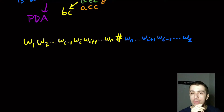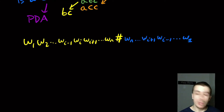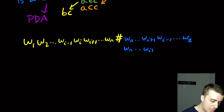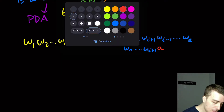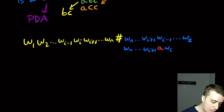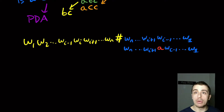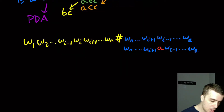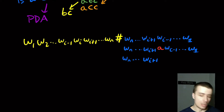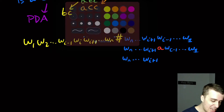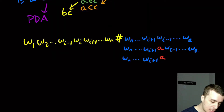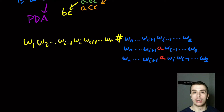Another possibility is substitution: we go to w(i+1) on the right side, substitute in some character — say 'a' — and then continue with w(i-1) down to w1, so we've swapped wi for 'a'. The third possibility is insertion: we insert an extra character 'a' here, so after it we must still have wi, then w(i-1) down to w1. Those are the three cases — deletion, substitution, and insertion.